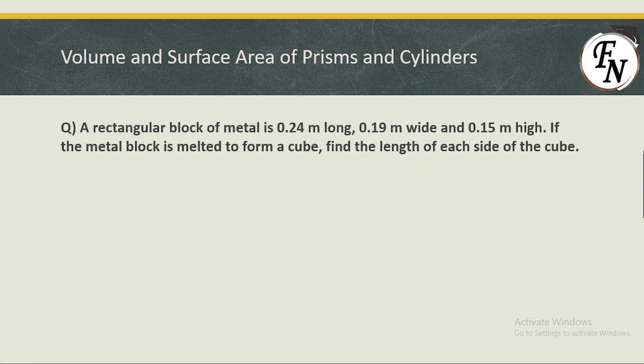Moving to question two, which is similar to the first. A rectangular block of metal is 0.24 m long, 0.19 m wide, and 0.15 m high. If the metal block is melted to form a single cube, find the length of each side of the cube. The block is a cuboid and all dimensions are given.